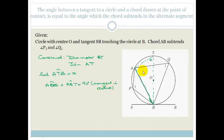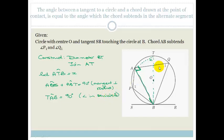We also know that angle TAB equals 90 degrees — because it's the angle in a semicircle. That means angle ATB plus angle ABT must equal 90 degrees, because the angle sum of the triangle is 180 degrees. So we have X plus angle ABT equals 90 degrees.